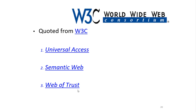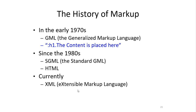Another W3C goal is the Semantic Web — to develop a software environment that permits each user to make the best use of the resources available on the web. The Web of Trust goal is to guide the web's development with careful consideration of the legal, commercial, and social issues raised by this technology.